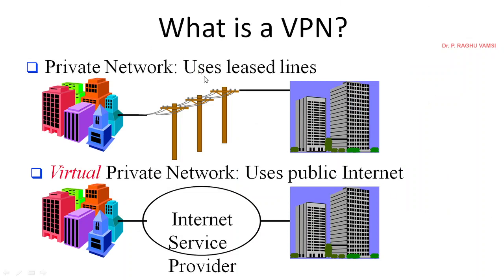In general, a private network uses leased lines — dedicated, secure lines over which communication happens. For example, if army personnel want to speak with each other, there is a hotline or secure private channel. Only via that private line can the officers communicate with each other.